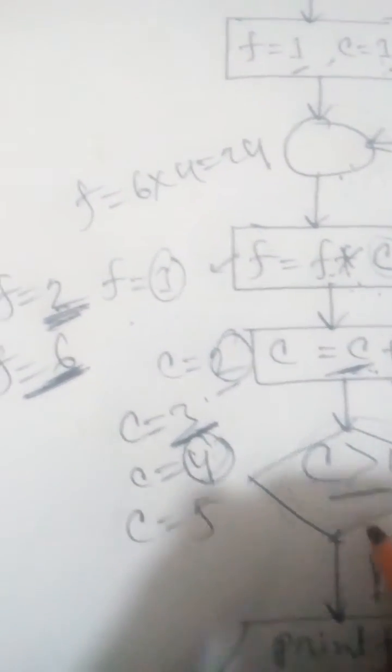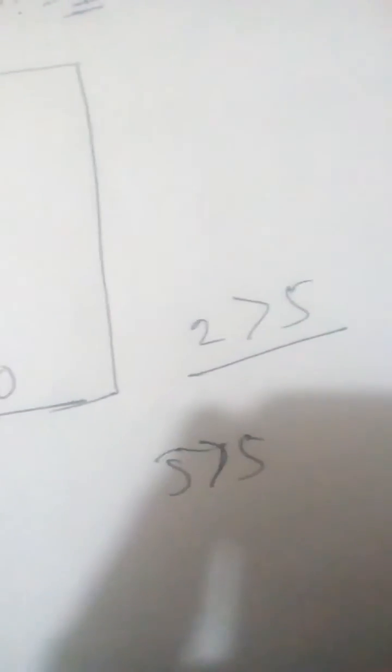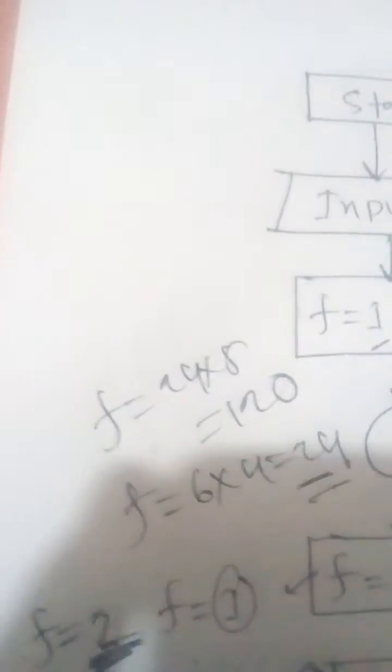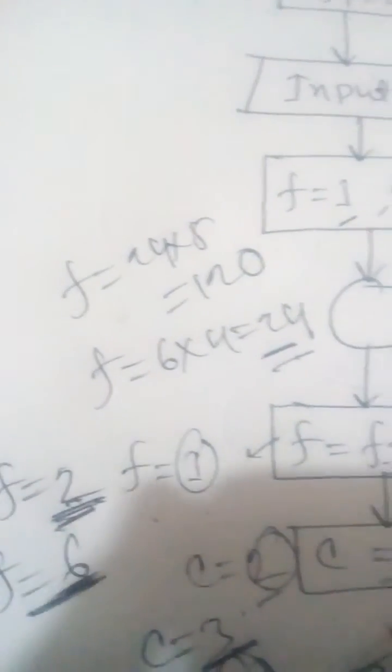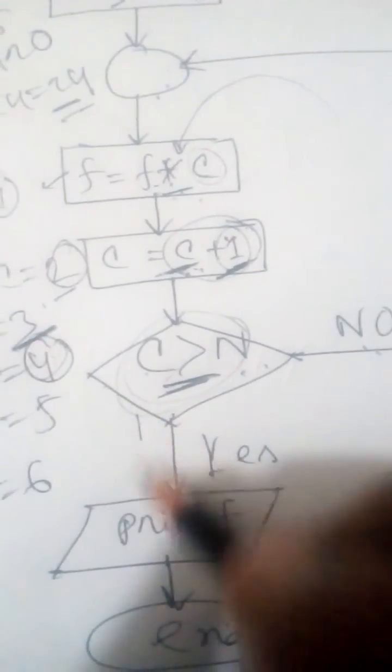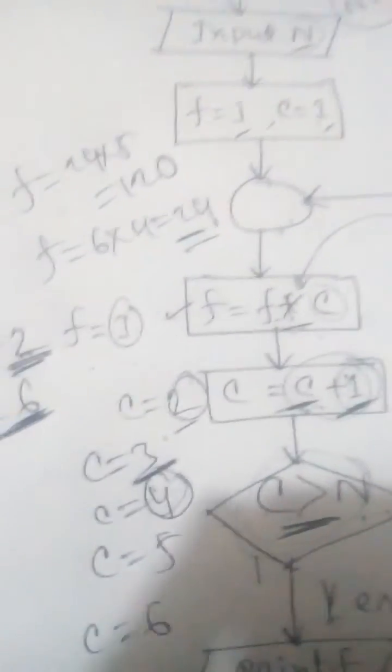With c equals 5, which is not greater than 5, the decision is still false, so it repeats again. Now f = 24 × 5 = 120. New f equals 120. Then c increments: c = 5 + 1 = 6. Now 6 is greater than 5 — that is a true statement — so we go yes and print f. The printed value of f is 120, which equals 5 factorial.